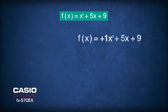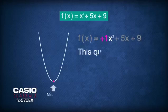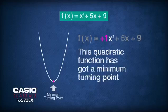First of all, notice that the coefficient of x squared is positive 1. That means this quadratic function has a minimum turning point.